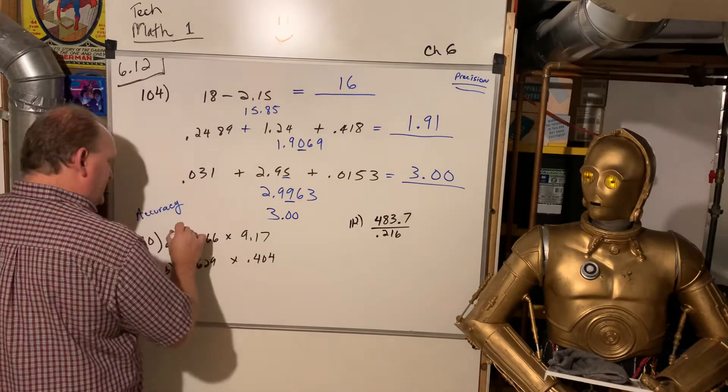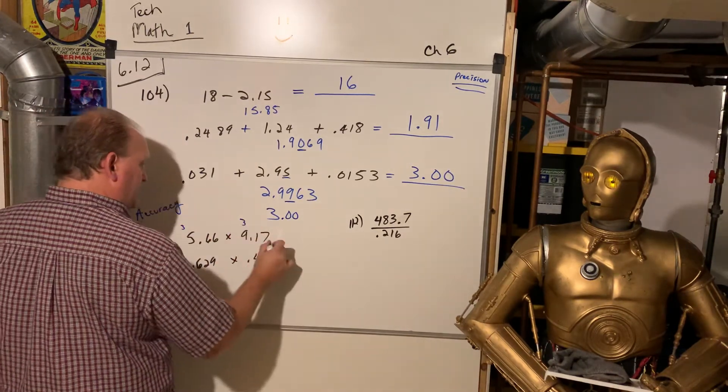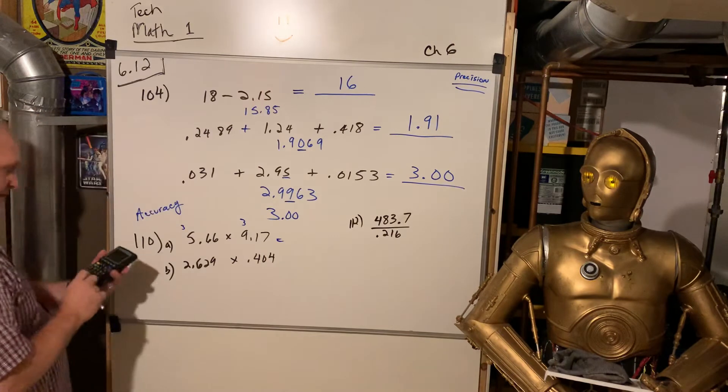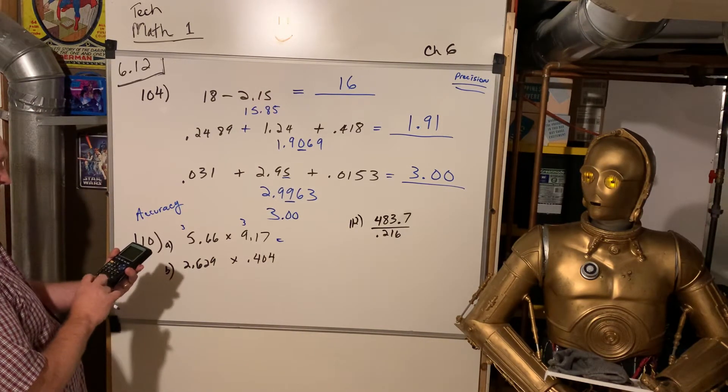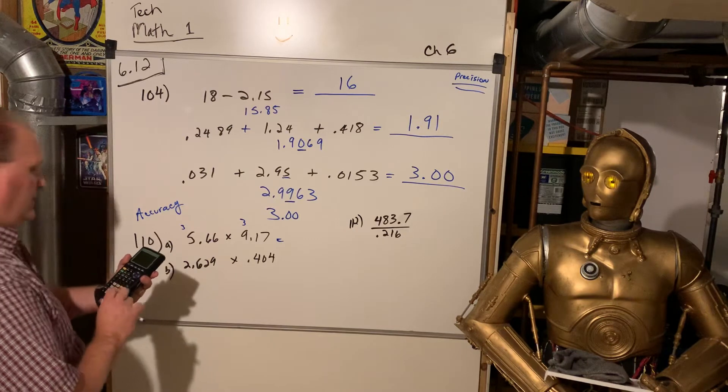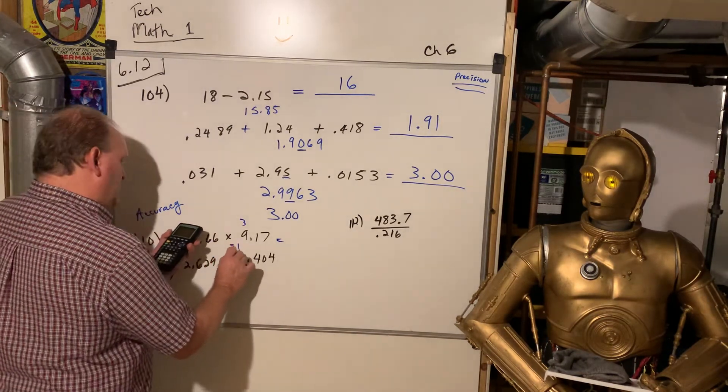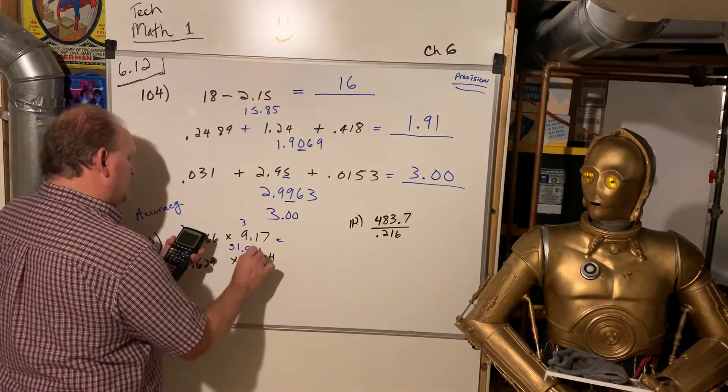So, look, this one has 3 significant digits, that one has 3 significant digits. So, my answer is going to have to have 3 significant digits. 5.66 times 9.17.